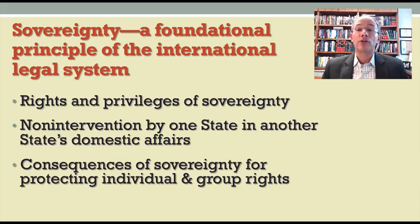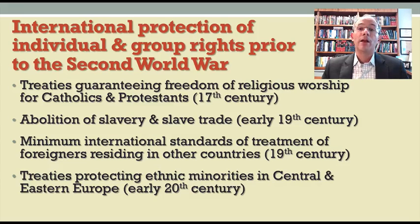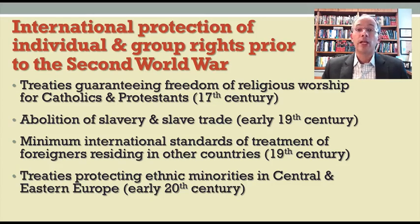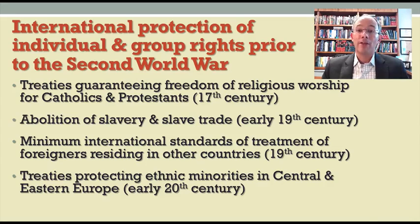As it happens, prior to the Second World War, there were a number of examples of instances where the rights of individuals and groups were protected. I put those four major examples on the slide before you. They include the protection of religious minorities in European principalities in the 17th century, issues relating to the abolition of slavery and the slave trade, the protection of foreign nationals who do business or reside in the territory of another country, and the protection of religious and ethnic minorities in Central and Eastern Europe after the First World War.